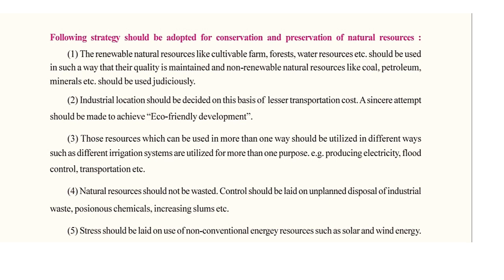The third point: resources which can be used in more than one way should be utilized in different ways. For example, different irrigation systems can be utilized for more than one purpose such as producing electricity, flood control, and transportation. Some resources can be used more than once in different ways, and we have to plan about using these resources strategically.